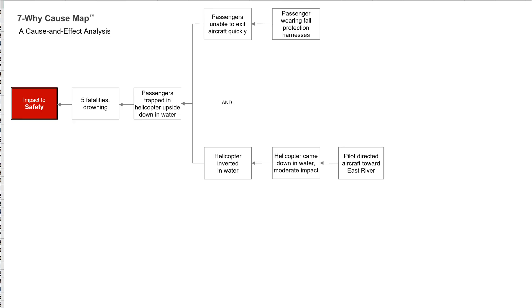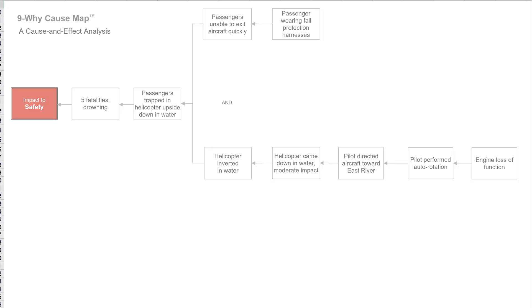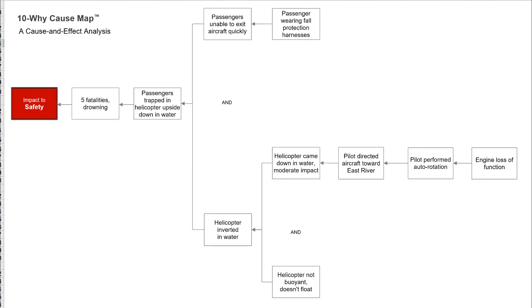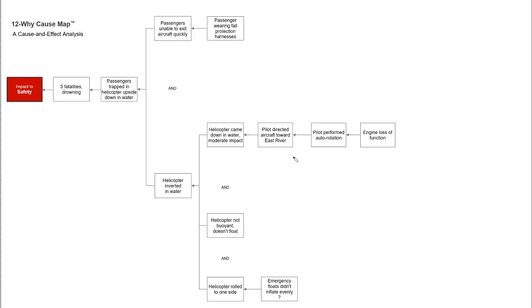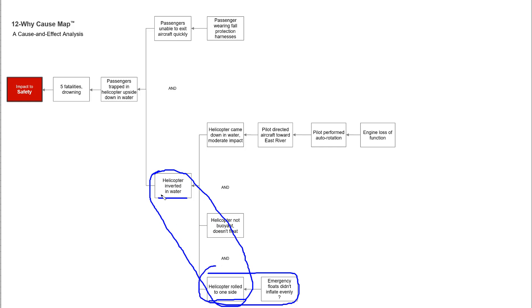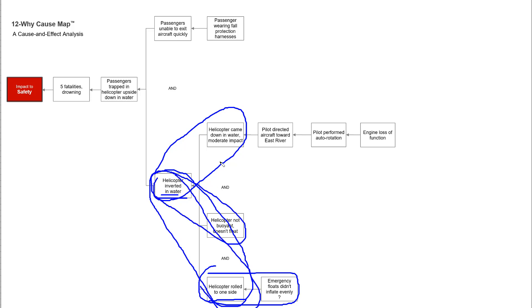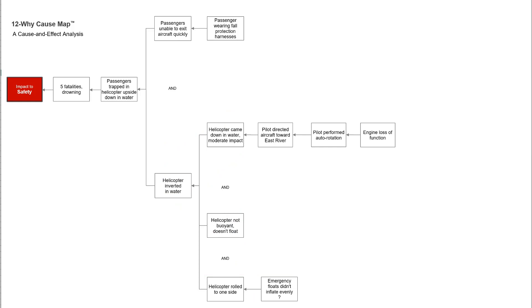This 5Y goes into a 7Y. The reason the helicopter is inverted in the water is because it came down in the water, and it came down in the water because there was an engine failure — so now it's immediately at a 9Y. The helicopter is inverted in the water because it's not buoyant. Commercial planes are pressurized and float, but this helicopter is not pressurized and sinks. The FAA requires that if you fly passengers over water, the helicopter must have a flotation system. The helicopter rolled to one side because the floats didn't inflate evenly, so three causes — came down in the water, not buoyant, and rolled to one side — were all required to produce this effect.